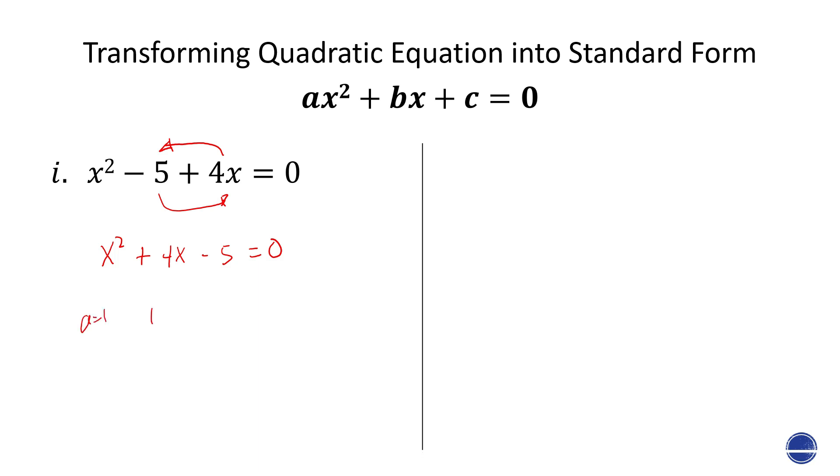And A here is 1, B is 4, and C is negative 5. I just did that to emphasize that this is a prerequisite for solving quadratic equations using the quadratic formula. When the equation is in standard form, it's a lot easier for us to identify A, B, and C.